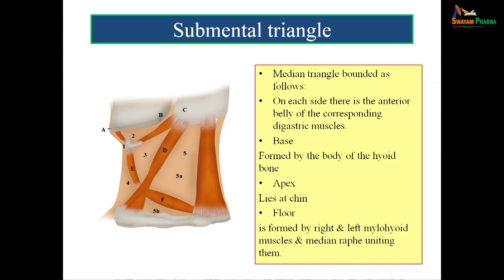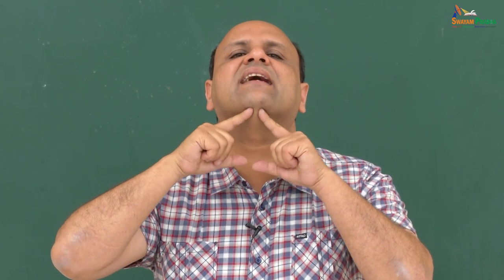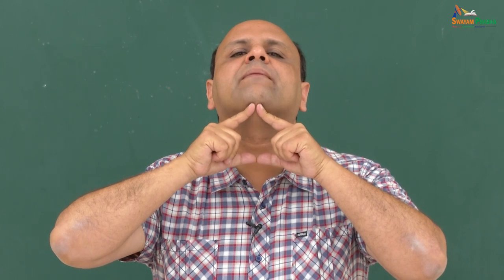The submental triangle is a median triangle bounded on each side by the anterior belly of the corresponding digastric muscle. The base is formed by the body of the hyoid bone, and the apex lies at the chin. The hyoid bone lies at the level of the C3 vertebra. The floor of the submental triangle is formed by the right and left mylohyoid muscles, which unite in a gutter-shaped manner.